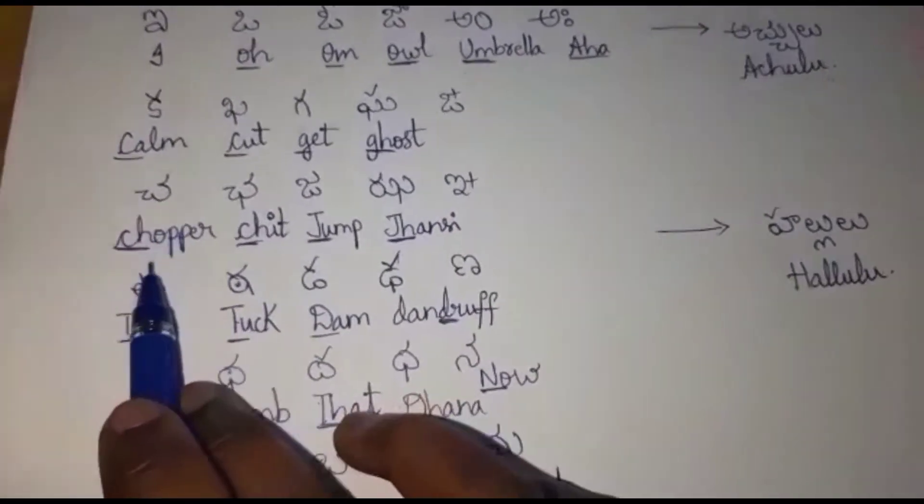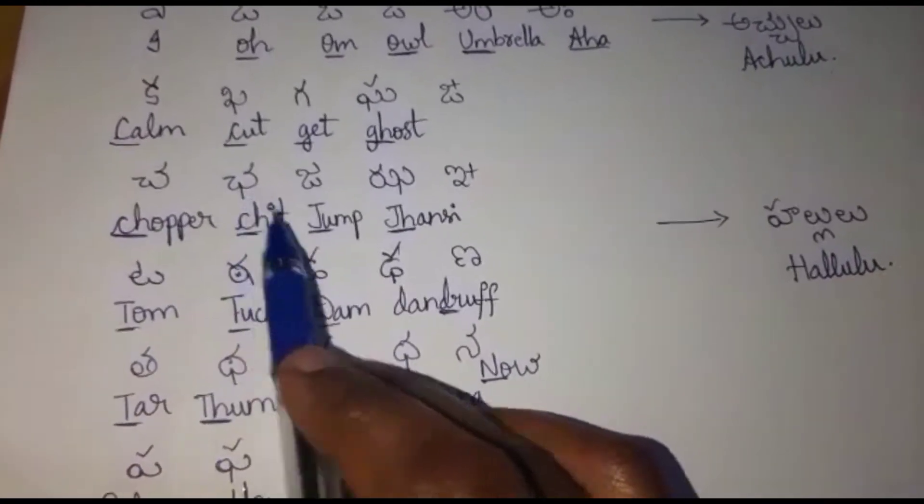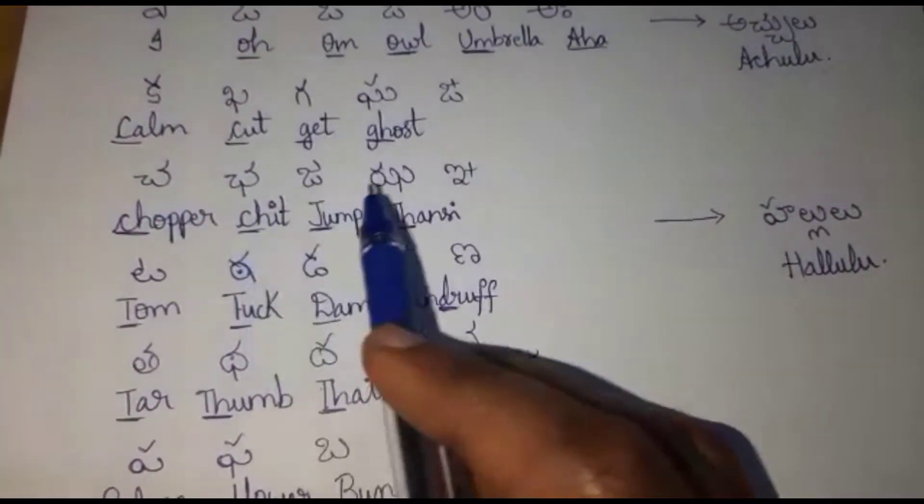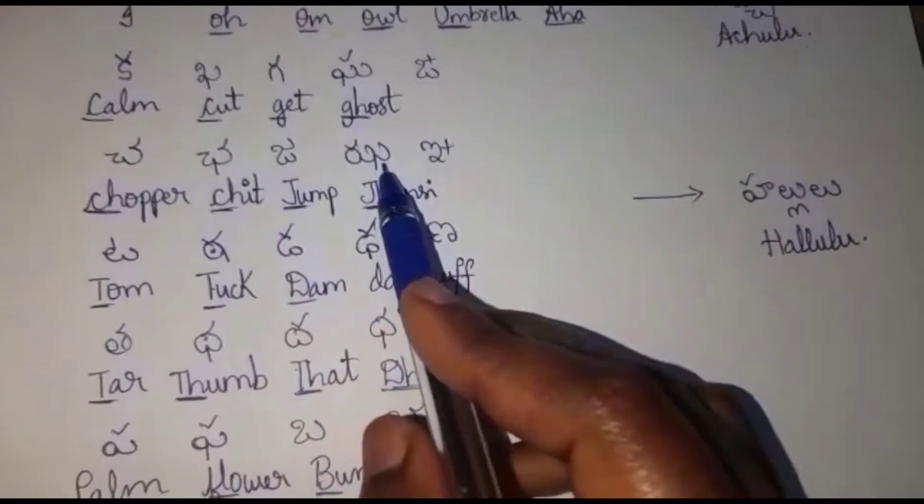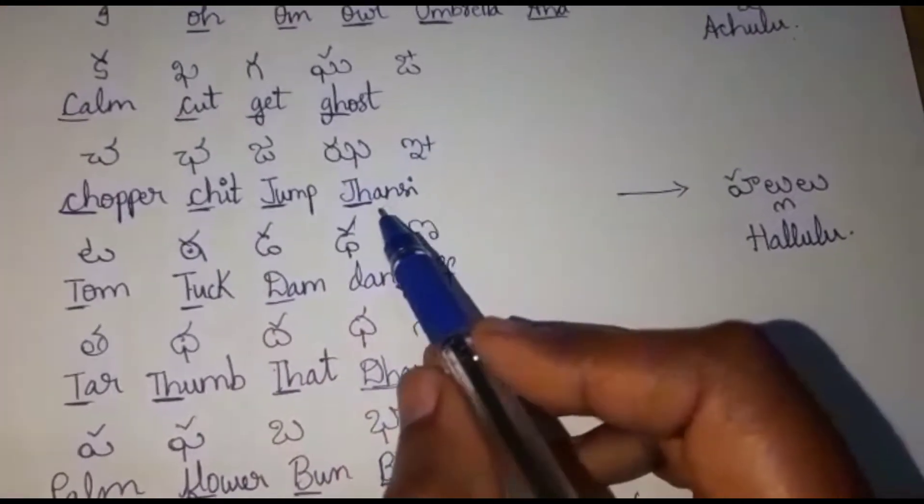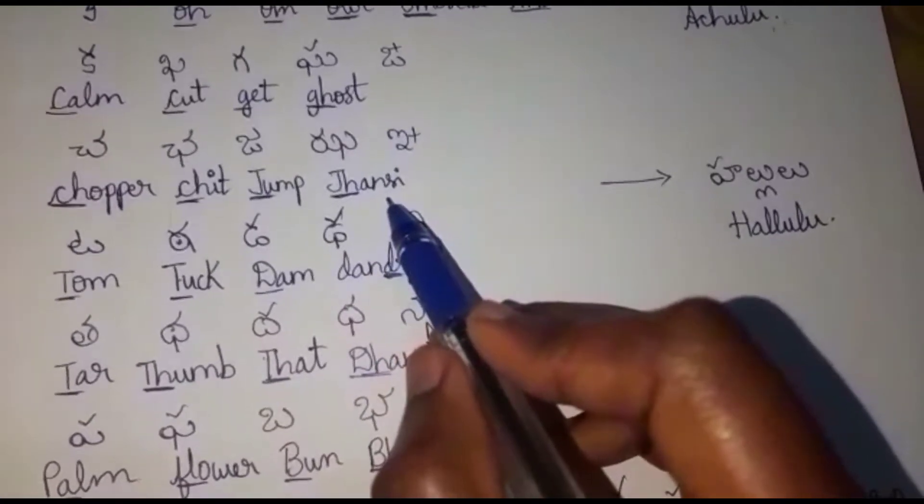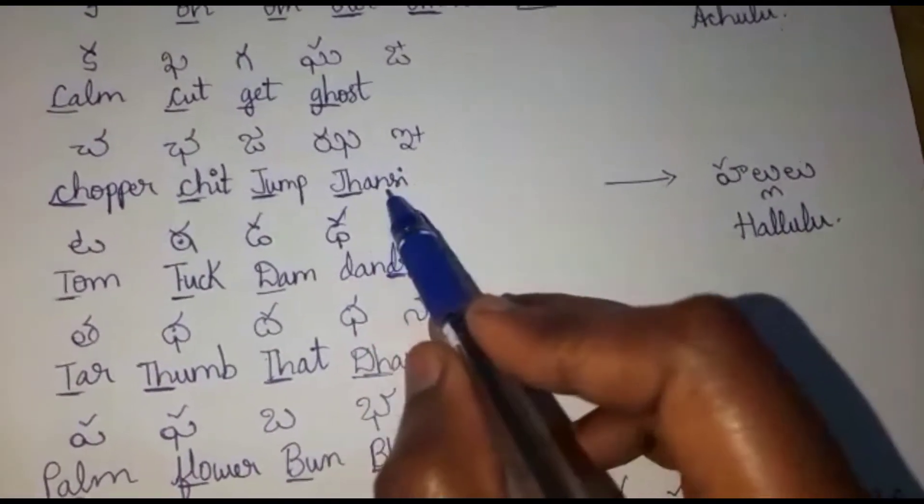Cha, Chopper. Chha, Chit. Ja, Jump. Jha, here I took the name as an example, Jhaansi.